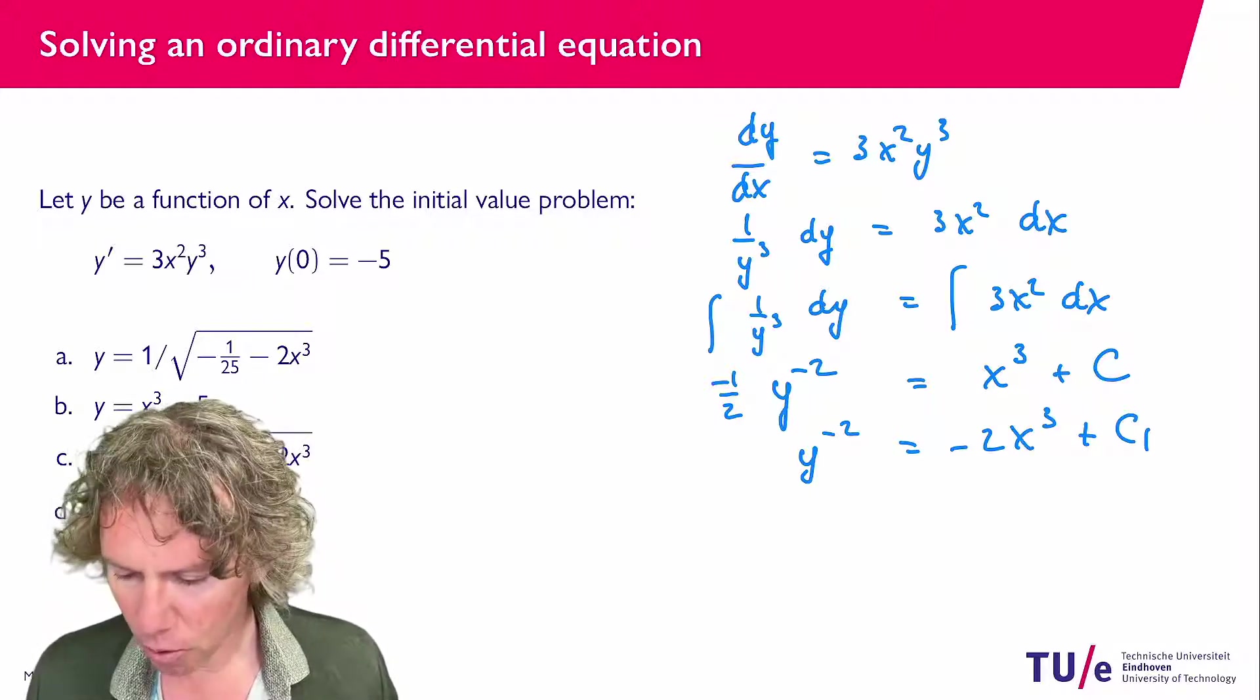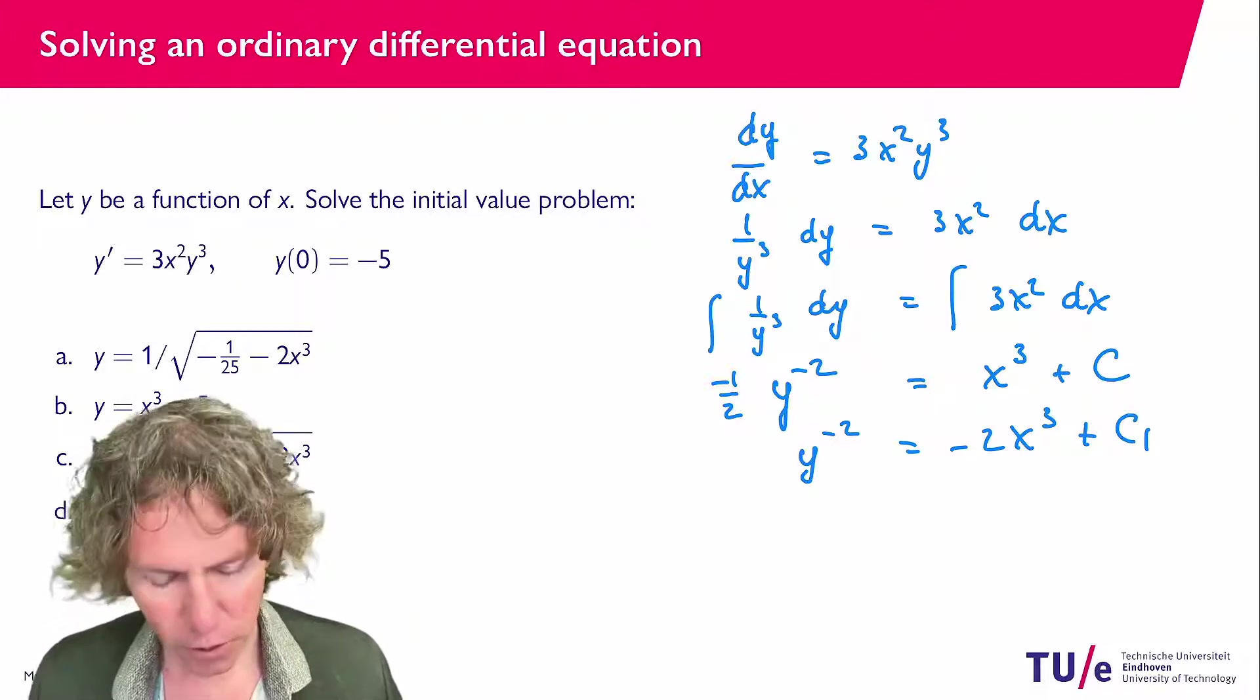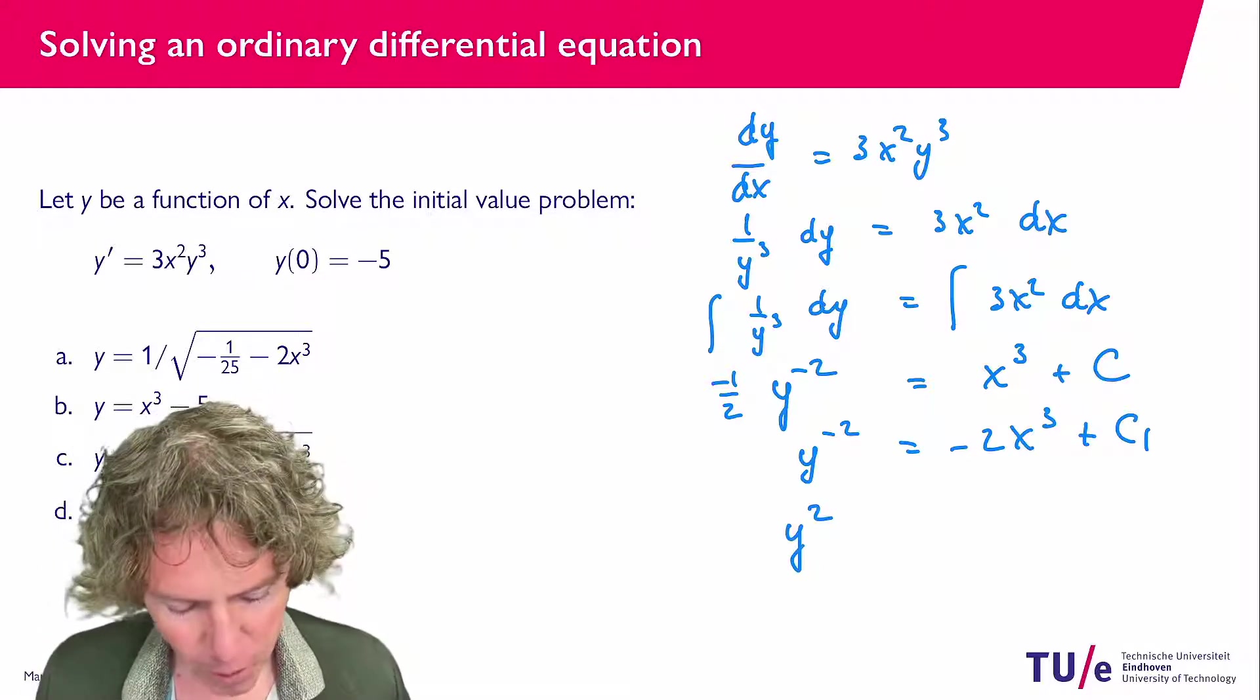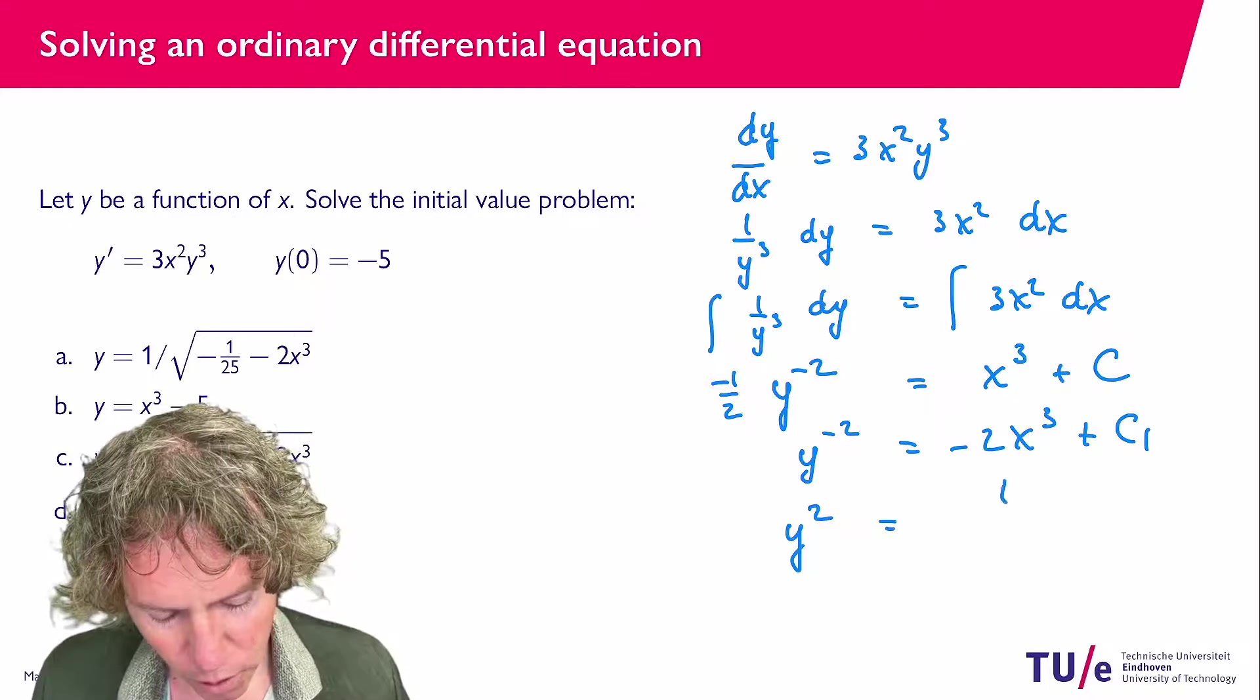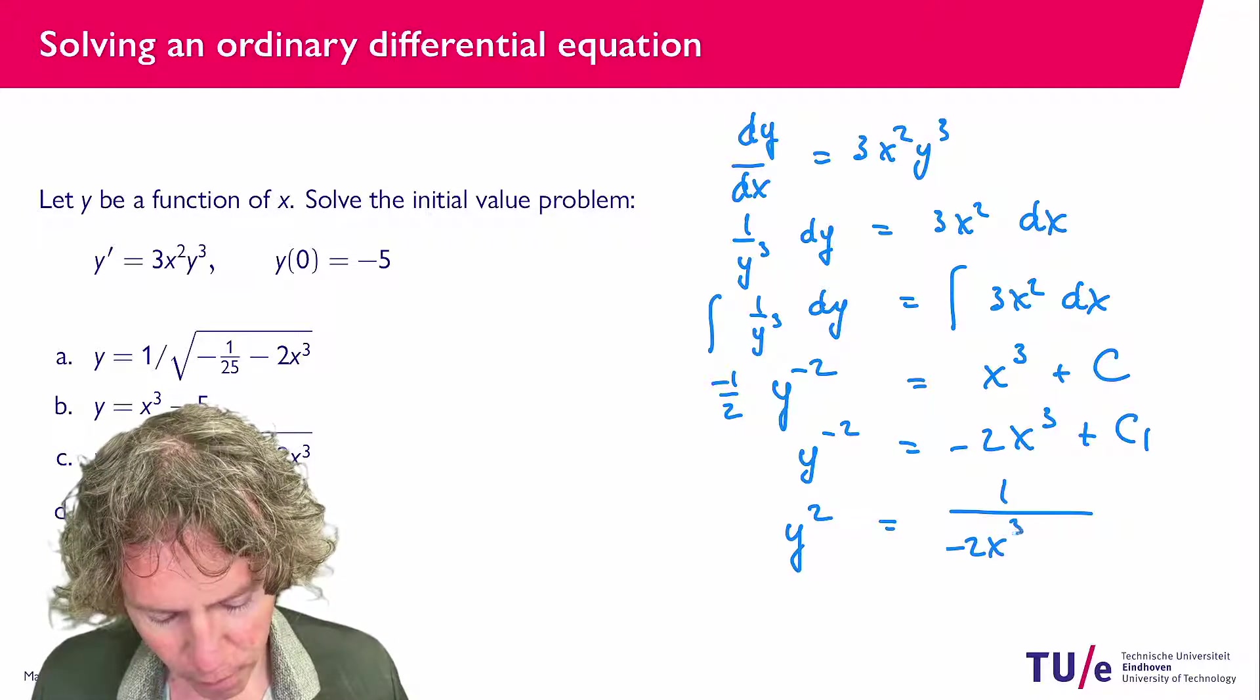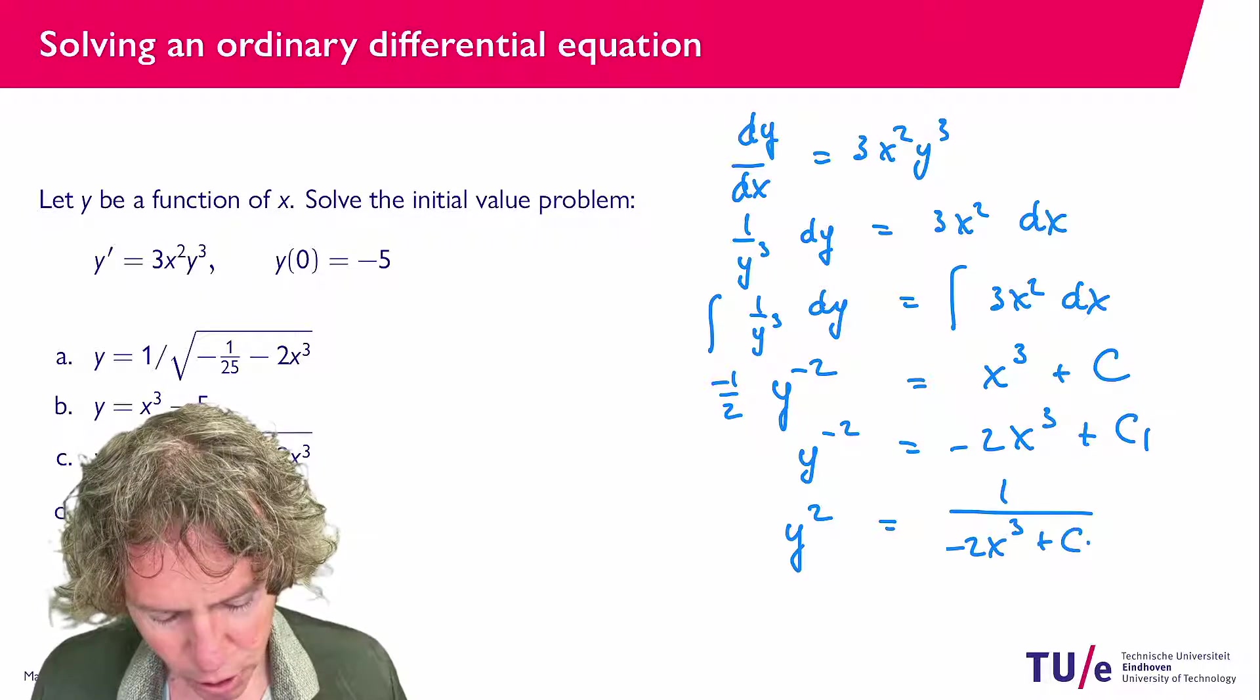So what I have now is that apparently y squared, so I'm going to put it upside down, equals 1 over minus 2x to the power 3 plus c1.